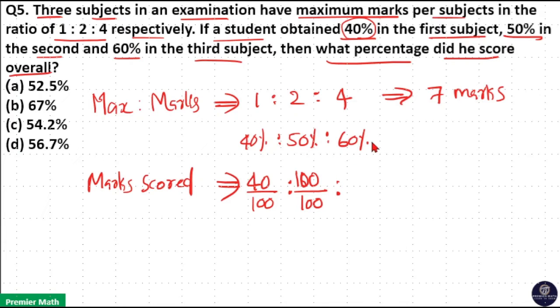In the third subject, he scored 60 into 4, which equals 240, or 240 by 100.